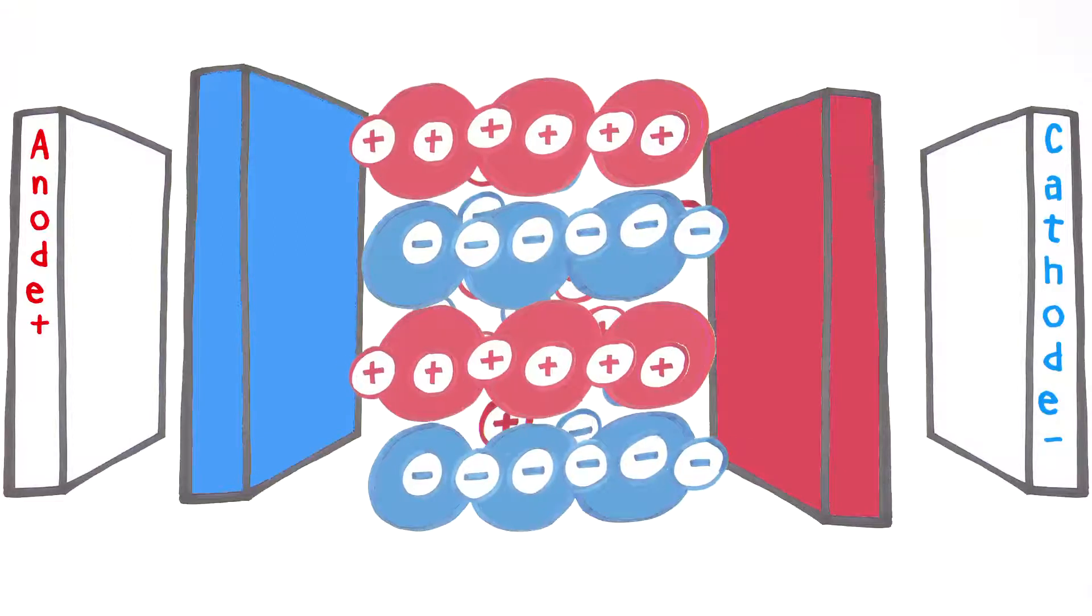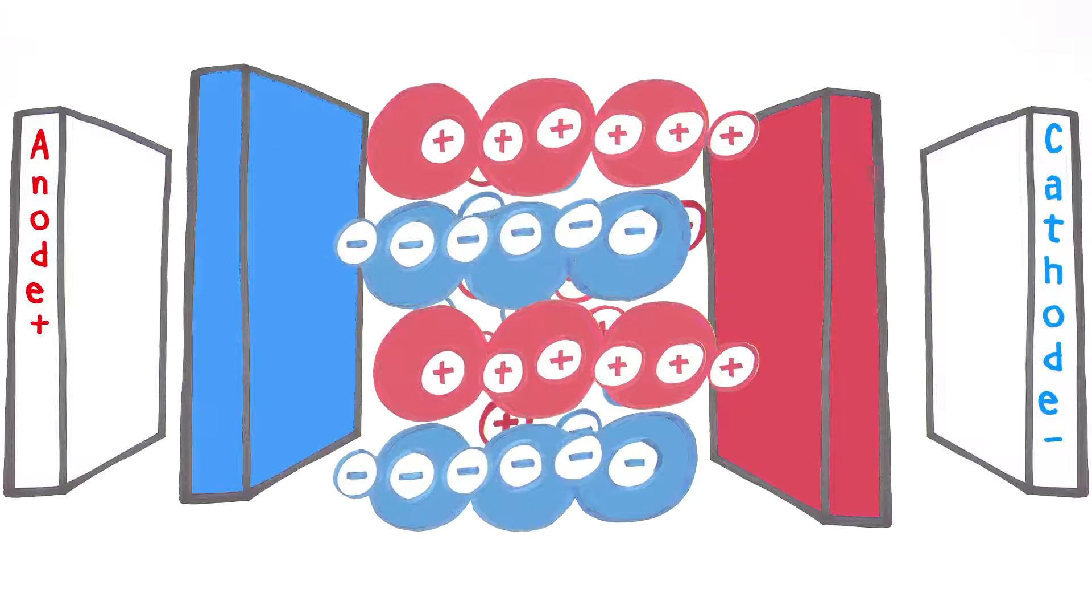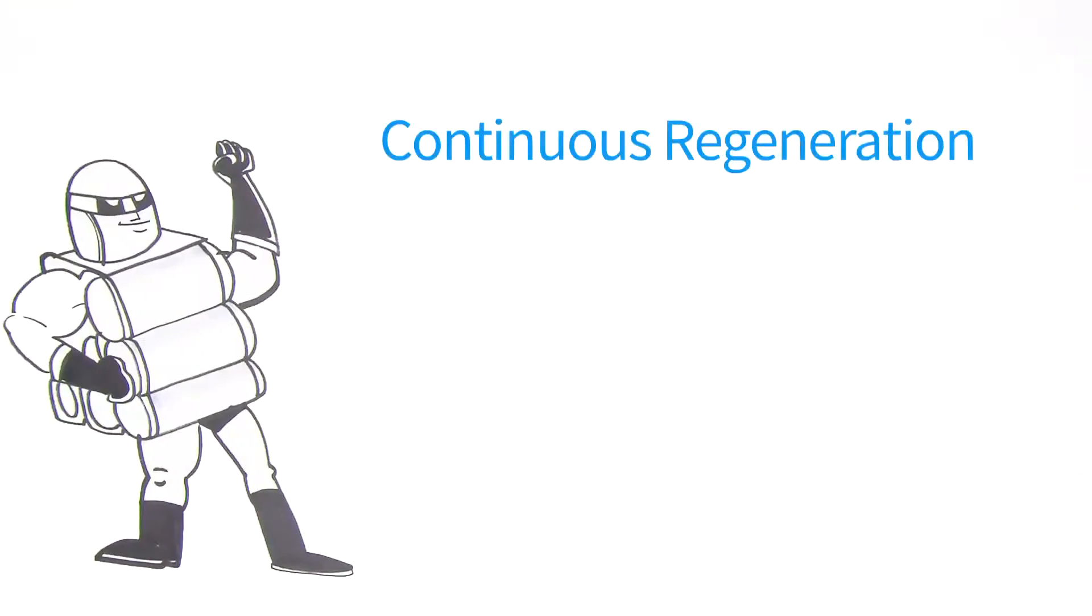As the water passing through the module becomes pure, an electrochemical process takes place that continuously reactivates the resins, creating the chemical regenerates in place so it is not necessary to handle hazardous chemicals.